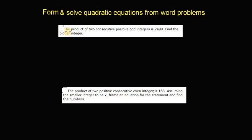So here's a word problem. It says the product of two consecutive positive odd integers is 2,499. Find the bigger integer. Well, you need to know that positive odd integers are things like 1, 3, 5, 7. They're odd integers.